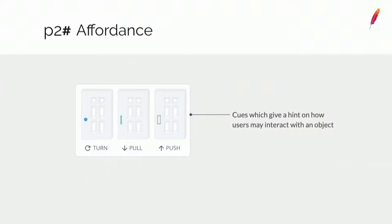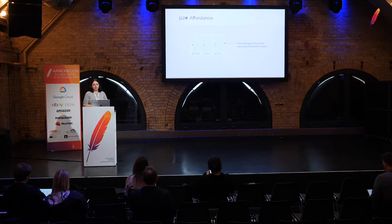Another big principle is called affordance. A common metaphor to explain affordance is doors. When you see a door with a circular knob, you understand you need to turn it to open the door. If you want users to know a door opens in a certain direction, you put a pull knob to pull and a flat handle to push. Affordance means giving cues on how the user may interact with an object — they have previous knowledge, or the object's attributes give them a clue what to do.